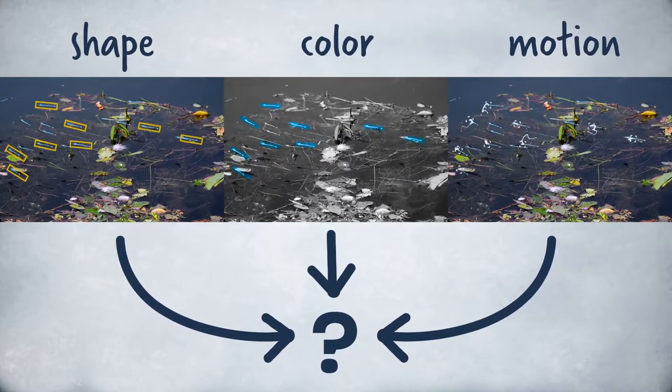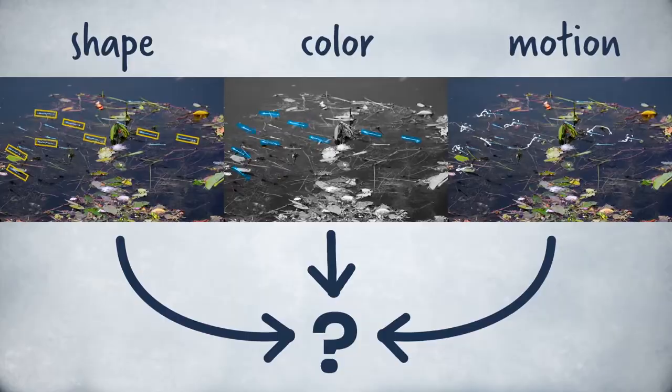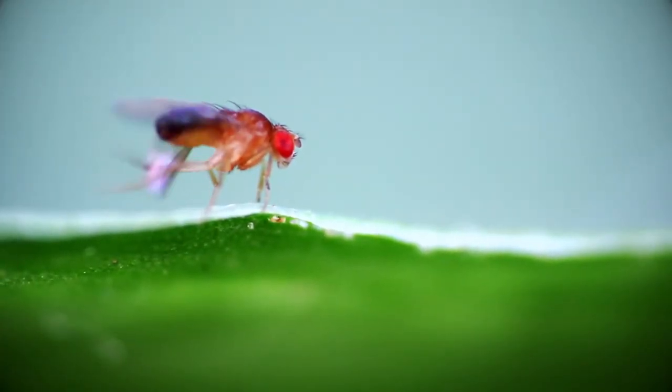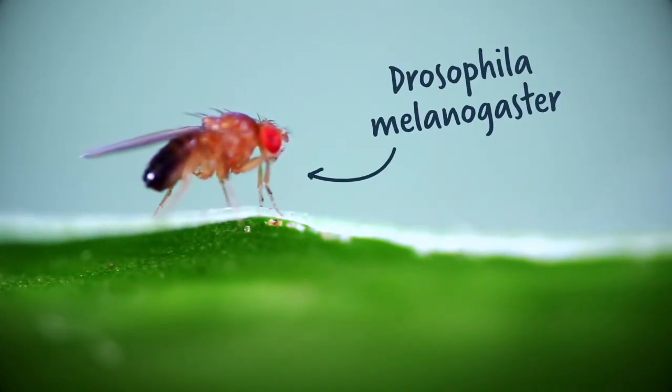How can detection of different features in the world actually change our actions? In this paper, we examined how detected features are translated into actions by studying the brain of the fly, Drosophila melanogaster.